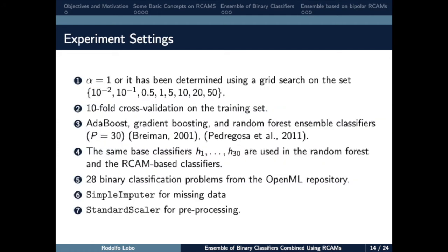Now, we present the settings of our computational experiments. Firstly, we use an exponential parameter alpha equal to 1 for the RCAM model. Also, we optimize the exponential parameter to obtain a better performance using grid search with the values given in this set. Secondly, we use 10-fold cross-validation on the training set. We compare the performances of AdaBoost, gradient boosting, and random forest classifiers. The last one using 30 base estimators.